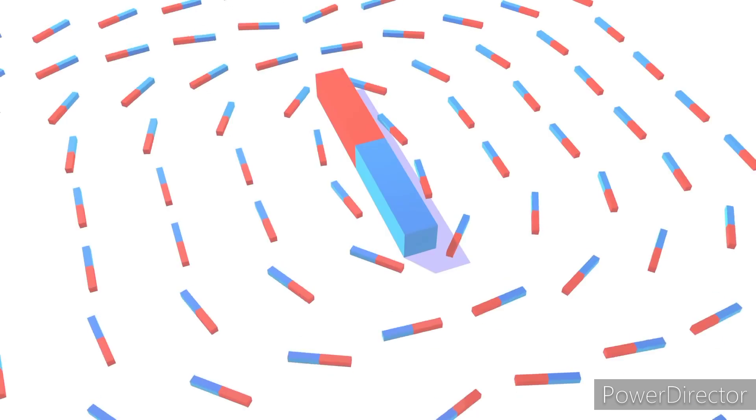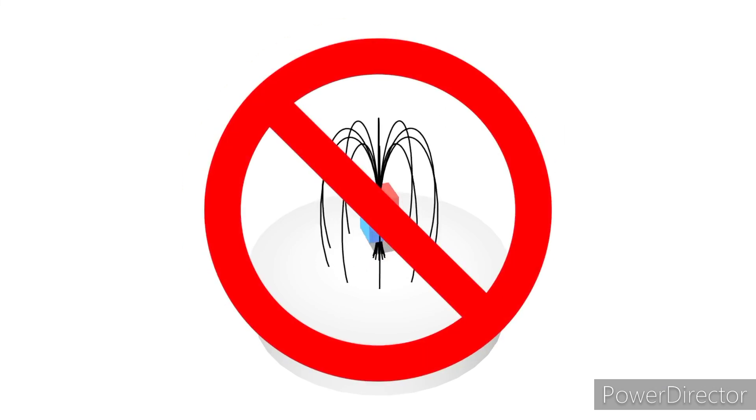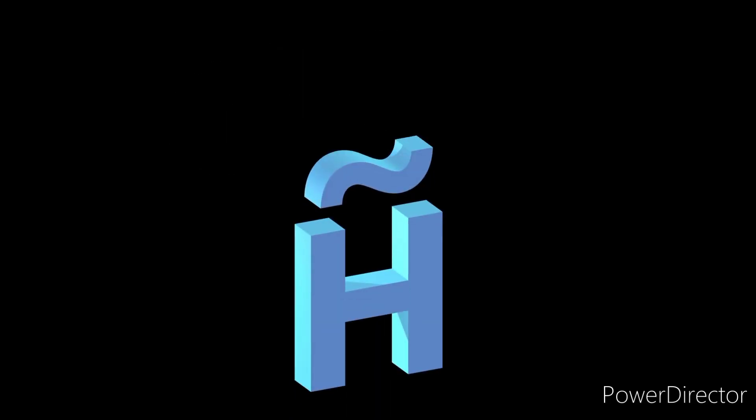This is because if you set up a current in a loop of a superconductor, there is nothing to stop it as there is no resistance. Therefore, it will keep flowing forever, forming a very powerful electromagnet. In fact, the most powerful magnetic fields on Earth are produced using superconductors.